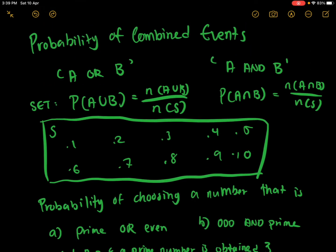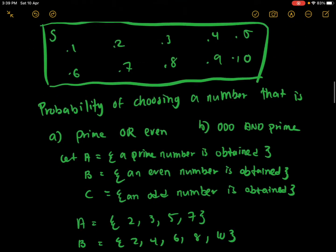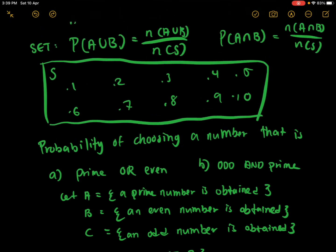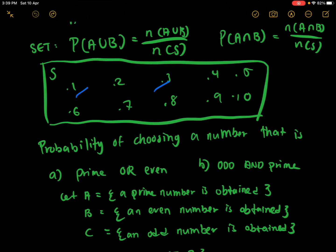For A and B, you want to find the scenario where if you pick a number, it fulfills both conditions. For example, I want to pick a number that is odd and prime. Odd numbers include 1, 3, 5, 7, 9. Prime numbers include 2, 3, 5, and 7. Since 3, 5, and 7 can fulfill both events, we only have a 3 out of 10 chance of getting an odd and prime number.